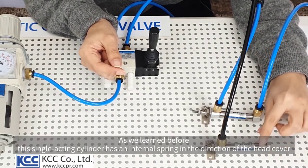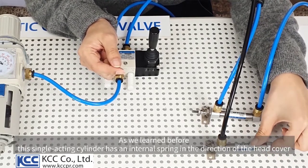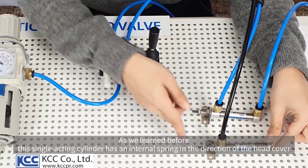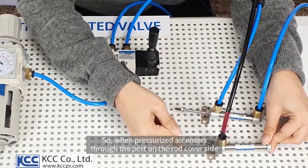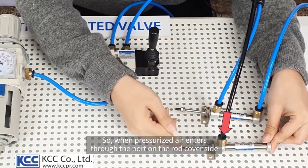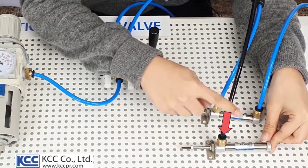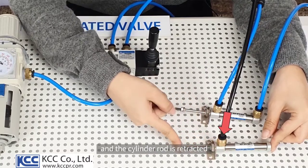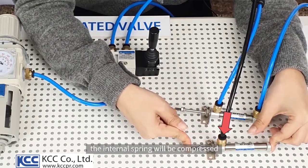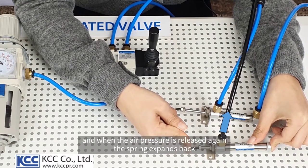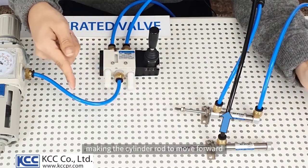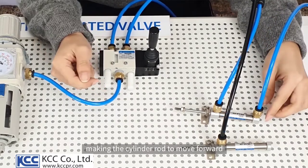As we learned before, this single-acting cylinder has an internal spring in the direction of the head cover. So when pressurized air enters through the port on the rod cover side, and the cylinder rod is retracted, the internal spring will be compressed, and when air pressure is released again, the spring expands back, making the cylinder rod to move forward.